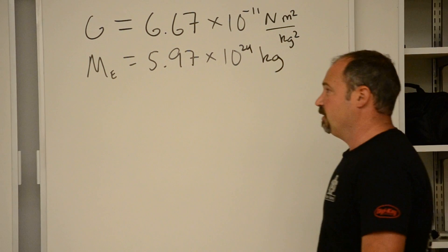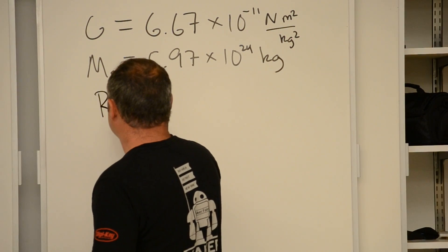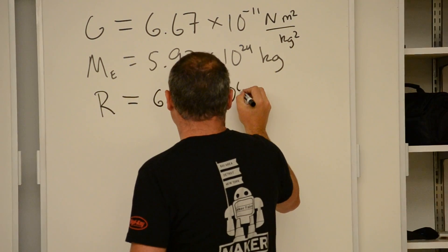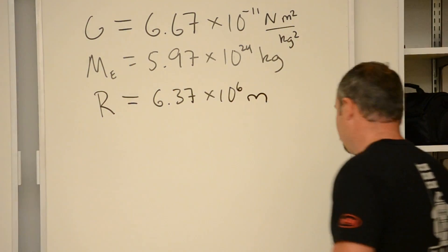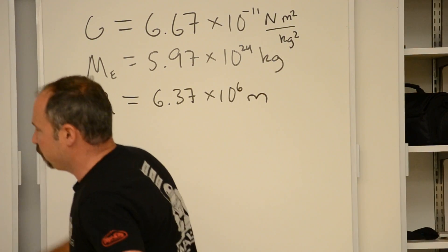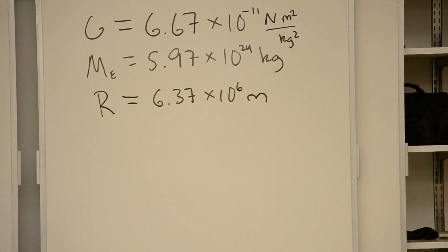I know that the mass of the Earth is 5.97 times 10 to the 24th kilograms. And then finally, we'll need the radius of the Earth in a second. And that's simply 6.37 times 10 to the sixth meters.